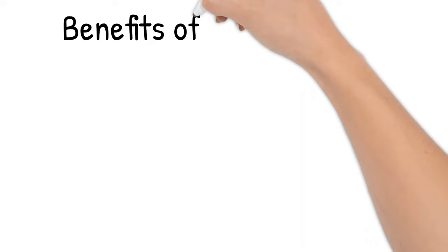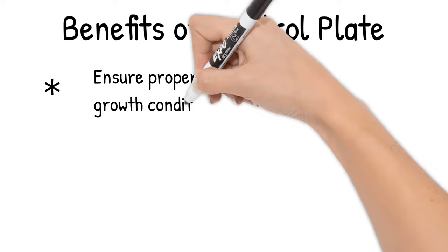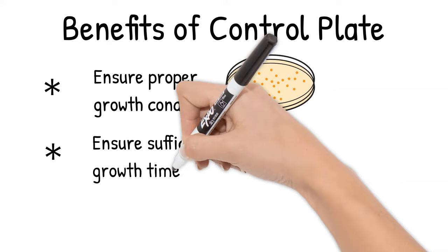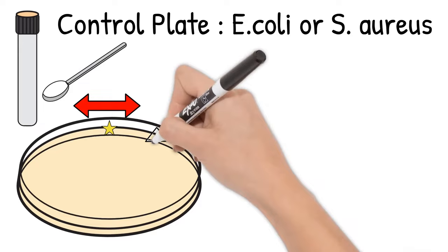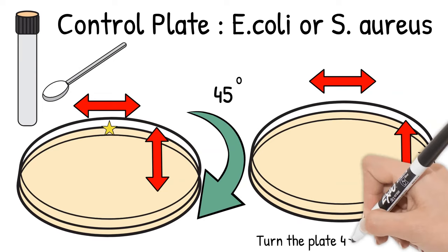It is a good practice to have a control plate incubated with each batch to ensure that the bacteria growth condition was not a factor and bacteria has sufficient time to grow before reading a zone of inhibition. A control plate is made in the same manner as testing plate but instead of using patient samples to make a lawn of bacteria, a control plate contains control organisms.